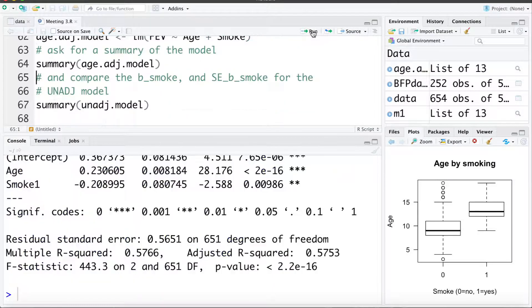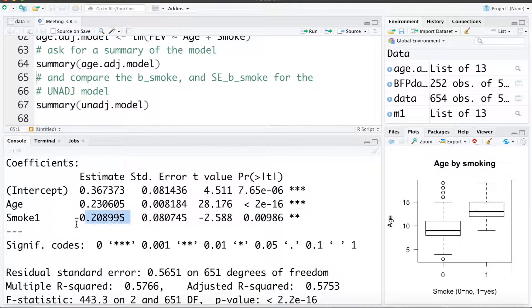We can ask for a summary of the model and here we can see the smoking coefficient is now negative 0.208. So the interpretation of this is when we adjust for age, or if we take a smoker and a non-smoker who are the same age, we'd expect the smoker's lung capacity to be about 0.21 liters lower on average than the non-smoker.